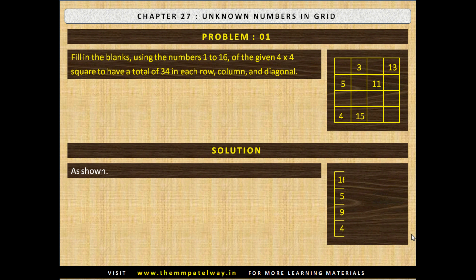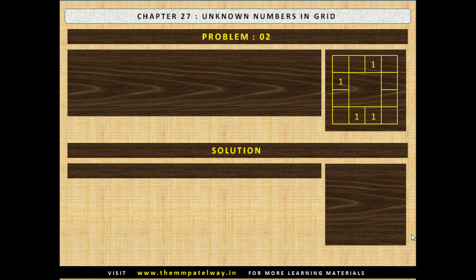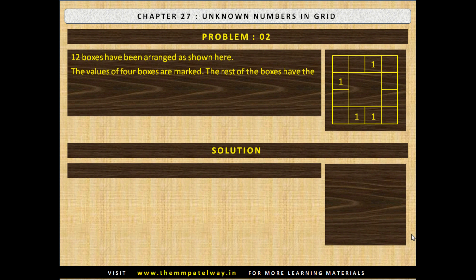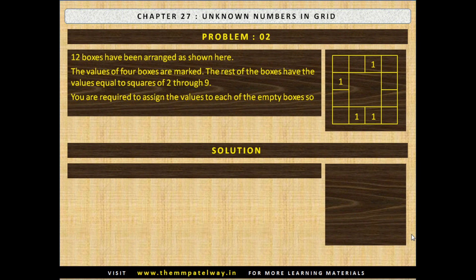The solution is shown. Problem 2. Twelve boxes have been arranged as shown. The values of 4 boxes are marked. The rest of the boxes have the values equal to squares of 2 through 9. You are required to assign the values to each of the empty boxes so that the total of numbers in each row and each column is 102. Now stop the video and solve the problem.